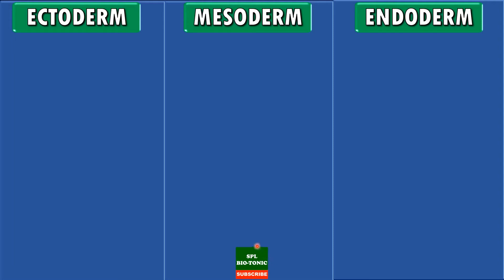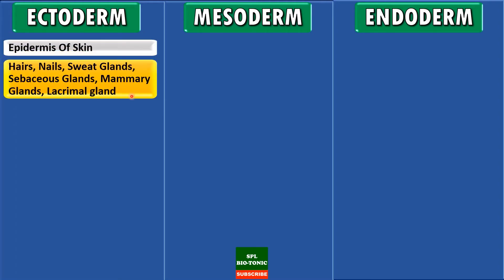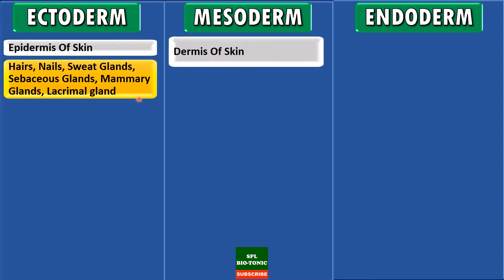The epidermis of the skin and structures associated with it, such as hairs, nails, sweat glands, sebaceous glands, mammary glands and lacrimal glands, are all derived from ectoderm. Whereas the dermis of the skin comes from the mesoderm.